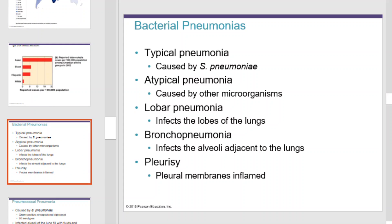Bacterial pneumonias: typical pneumonia is caused by S. pneumoniae. Atypical pneumonia is caused by other microorganisms. Lobar pneumonia infects the lobes of the lungs. Bronchopneumonia affects the alveoli adjacent to the bronchi. And pleurisy affects the pleural membranes.